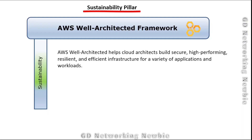Now, this AWS Well-Architected Framework provides a set of questions and design principles across six pillars. We have discussed all the five pillars and this will be the last pillar — the sustainability pillar — which we are going to discuss in this video.